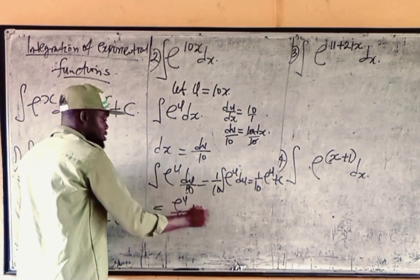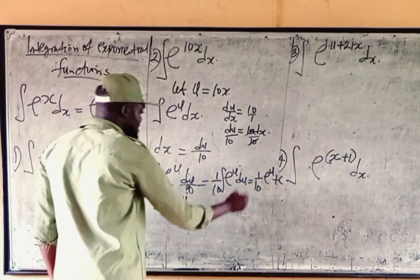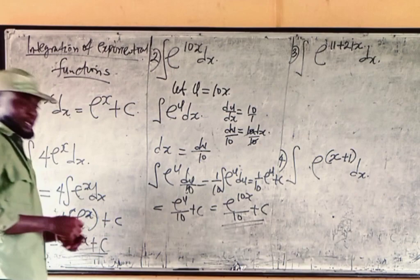What is u? u is the same thing as 10x. So we have exponential 10x over 10, 1 over 10. Simple as that.